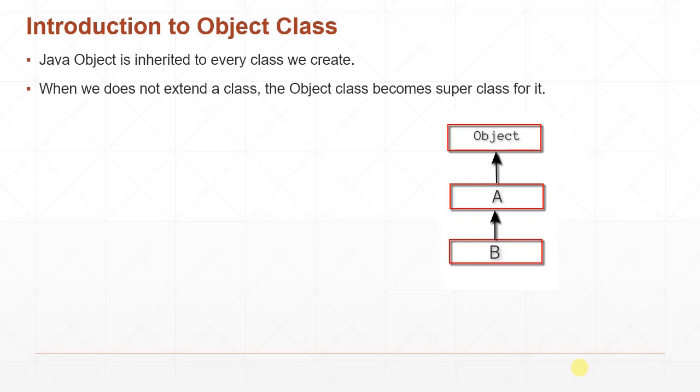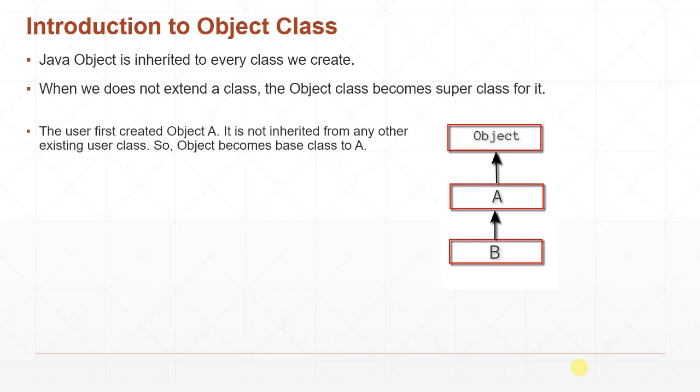Let's say we created a class U. Since it is not inherited from any other existing class, the Object class of Java automatically becomes the base class for class U. So the inheritance relationship exists automatically between Object and class U — Object is the base class and U is the subclass.